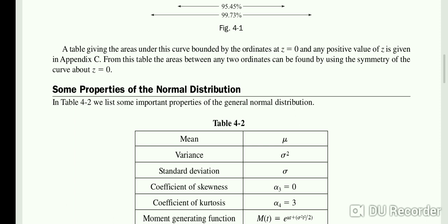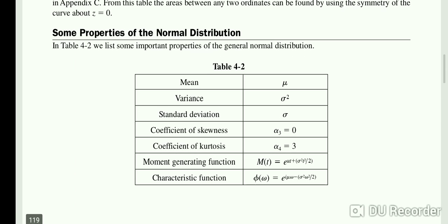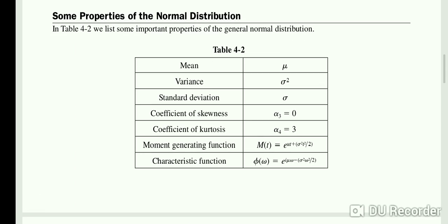Let us talk about some properties of the normal distribution. Mean will be μ, variance will be σ², standard deviation will be σ, coefficient of skewness α₃ equals 0, coefficient of kurtosis α₄ equals 3, moment generating function M(t) equals e to the power (μt plus σ² t² over 2), and characteristic function φ(ω) equals e to the power (iμω minus σ²ω² over 2).